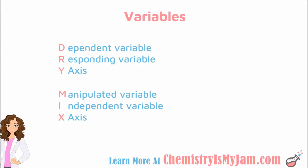Here is an acronym that may help you keep all of this straight: DRY MIX. The D is for dependent variable, which is often called the responding variable, and this is very often found on the y-axis if you are graphing the data from your experiment. The M is for manipulated variable, which is another name for the independent variable, which is often found on the x-axis during your experiment.